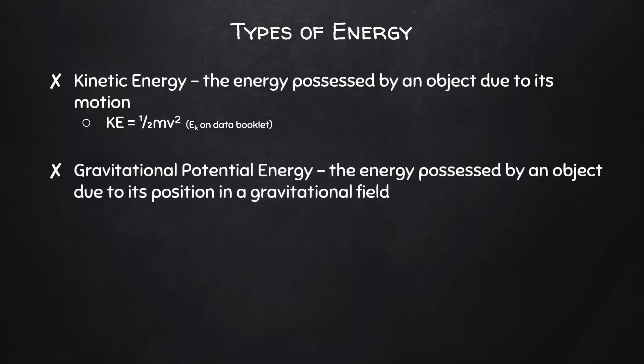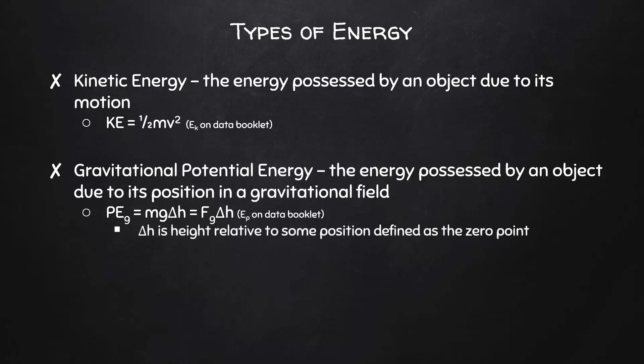The next type of energy in this unit is gravitational potential energy. This is the energy possessed by an object due to its position in a gravitational field. The equation for gravitational potential energy is mass times gravitational field strength times height, or weight times height. Delta H represents the height of the object relative to some position defined as the zero point — this might be the ground, the floor, a tabletop, or some other position that is probably the lowest the object could reasonably go.